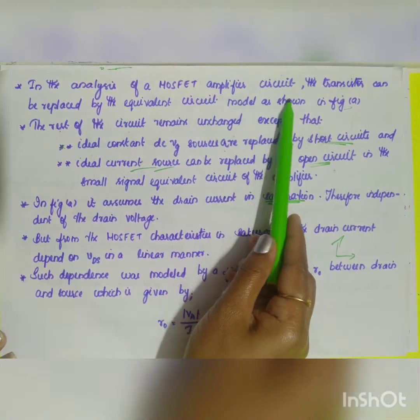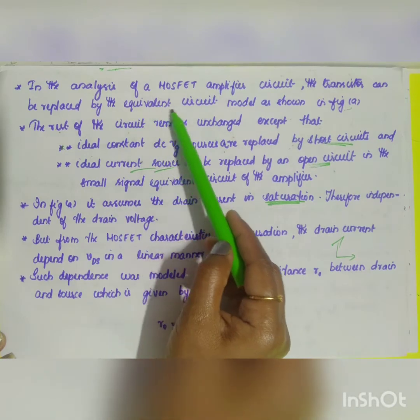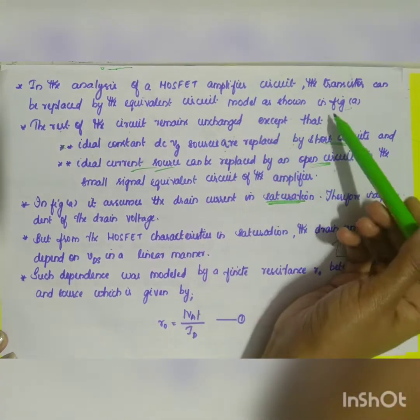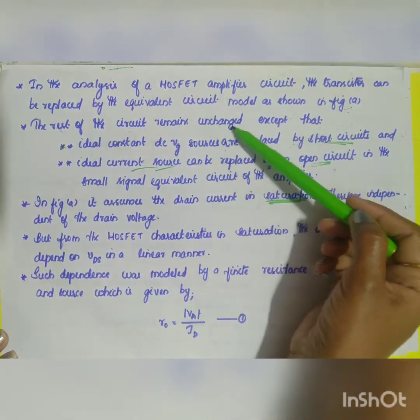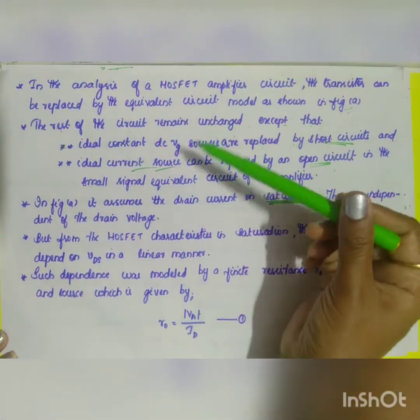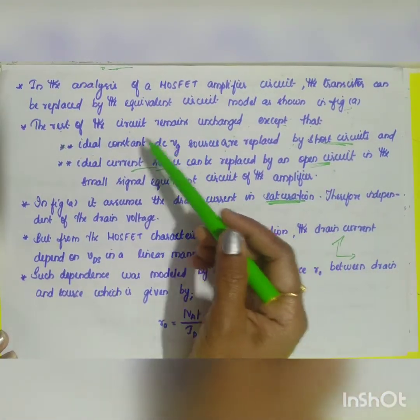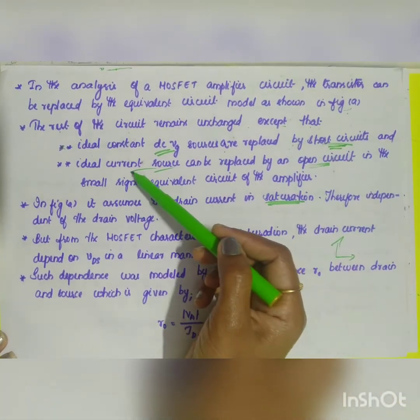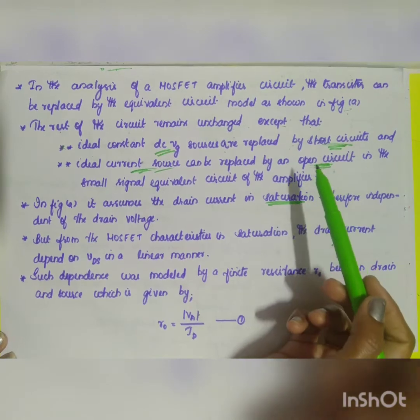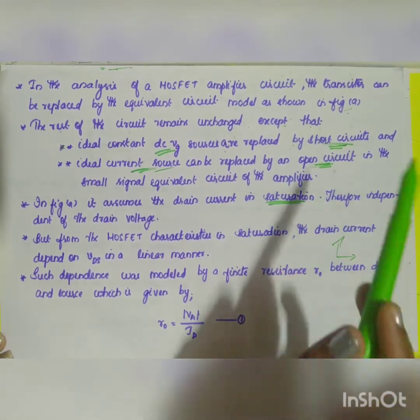In the analysis of the MOSFET amplifier, the transistor can be replaced by the equivalent circuit model as shown in figure A. As I mentioned before, the rest of the circuit remains unchanged except what are the things we have done in the circuit. DC voltage sources are replaced by short circuit and the current source can be replaced by open circuit in the small signal equivalent of the amplifier.